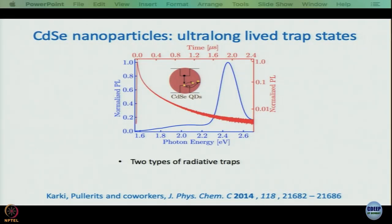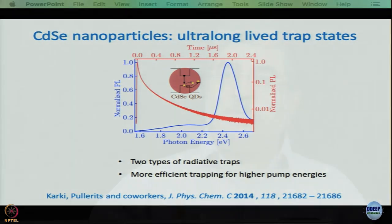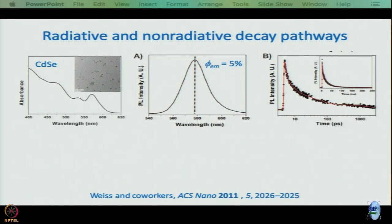What is established in the work of Karki and co-workers is that for cadmium selenide there are two types of radiative traps, so it is not a single exponential decay. Secondly, if you pump with higher energies, there is more efficient trapping. We will not go very deep into this right now, but when we talk about multi-excitons we will revisit the effect of pump energy. Let us now move on to work by Weiss and co-workers. We will discuss the philosophy of what they have done in this module and return to the mathematical details of their data analysis in the next module.